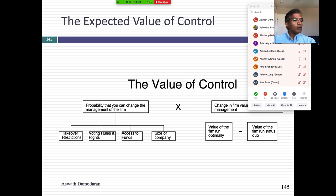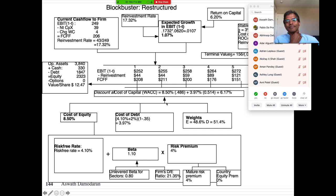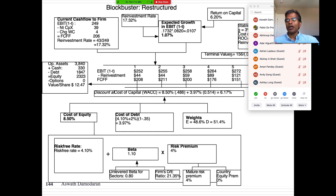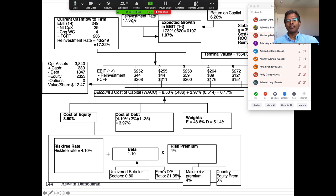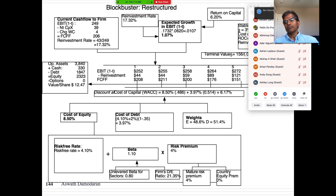Pablo asks about the Blockbuster restructuring: if the return on capital is only 6.2%, how is it possible in a bad business? I'd make the reinvestment rate zero. When you grow and earn exactly the cost of capital, that growth is zero NPV — no added value. Making the reinvestment rate zero still gives a value of about $12.50 per share, and the freed cash goes to stockholders as dividends or buybacks. Nobody's coming into the stores — why are you still investing?